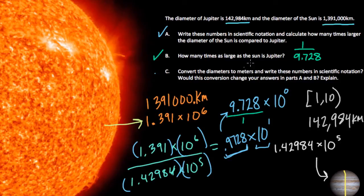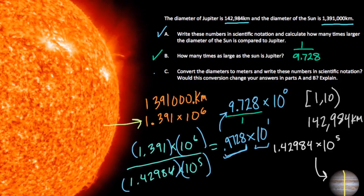Here they want us in C to convert the diameters to meters and write these numbers in scientific notation. And they are asking us, would this conversion change your answers in parts A and B? Explain.